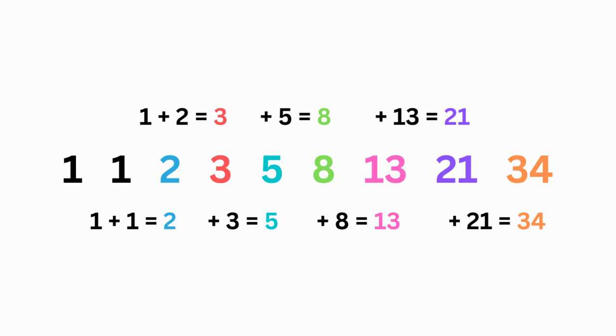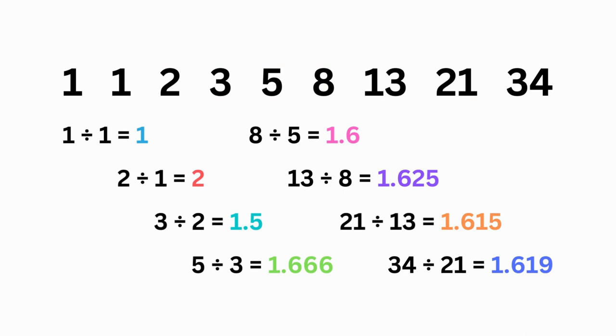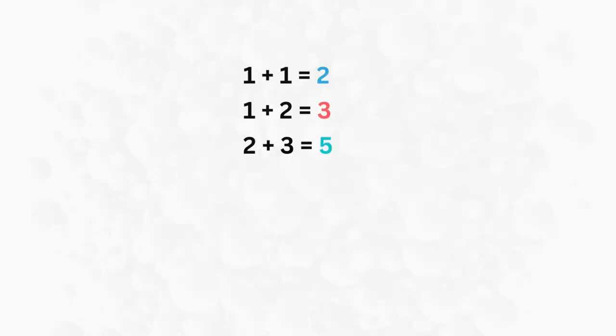For starters, in order to find the next number in the sequence, the first two numbers have to be added together, and then we repeat the same pattern with the following numbers. If we want to get the ratio, we divide the second number by the first, then the third number by the second, then the fourth by the third. As we repeat the division pattern until we hit 34, this ensures that we end up with figures that range anywhere from 1 to 1.5 or 1.61 to 2, just to name a few.